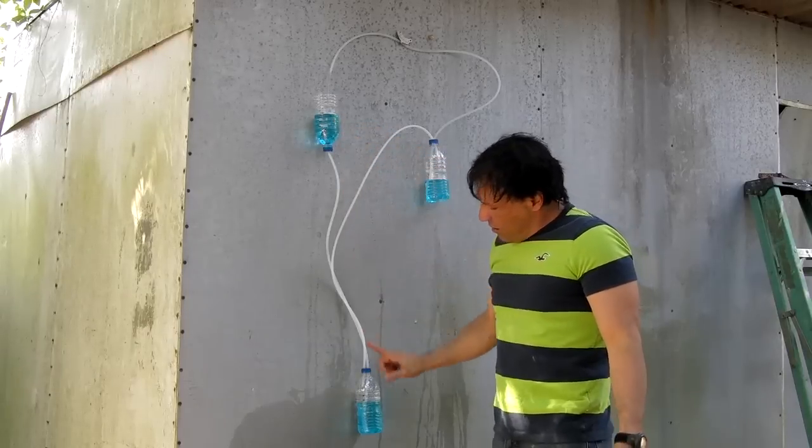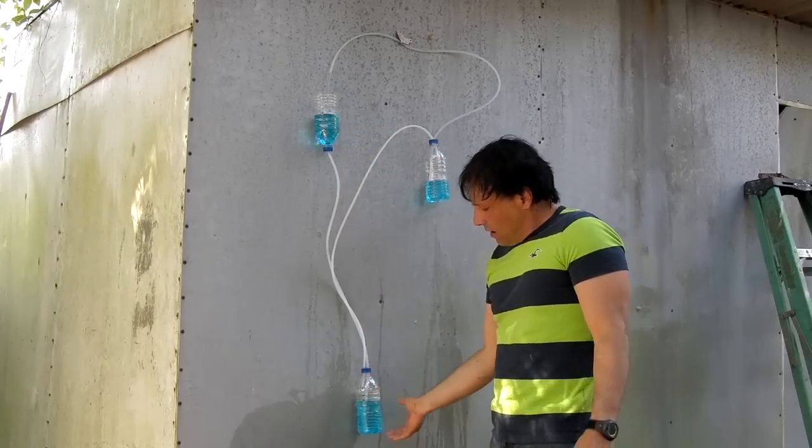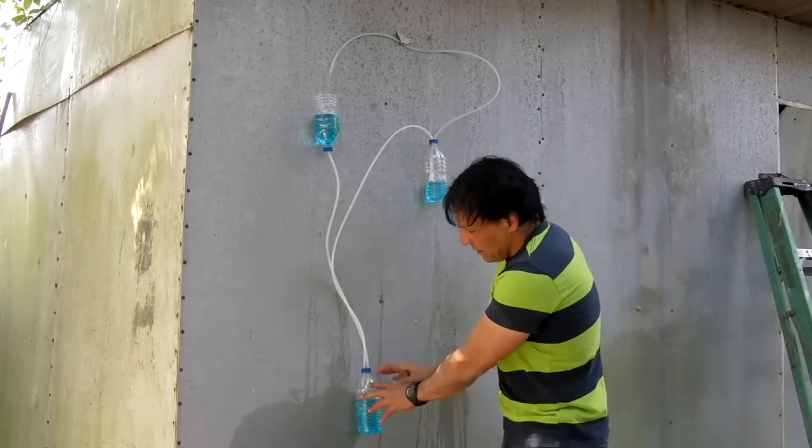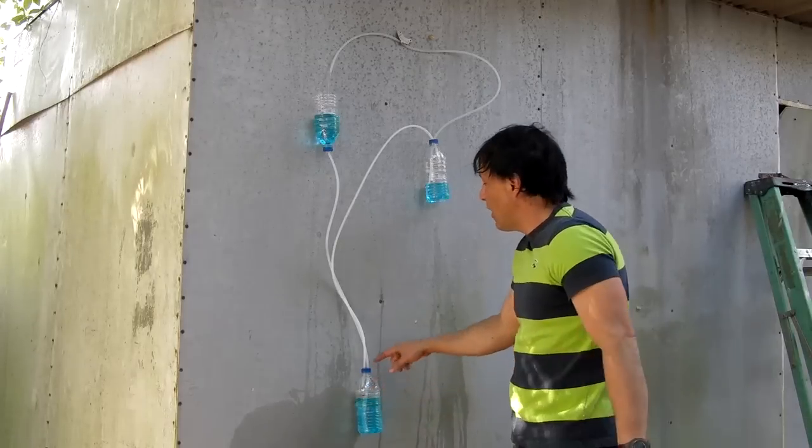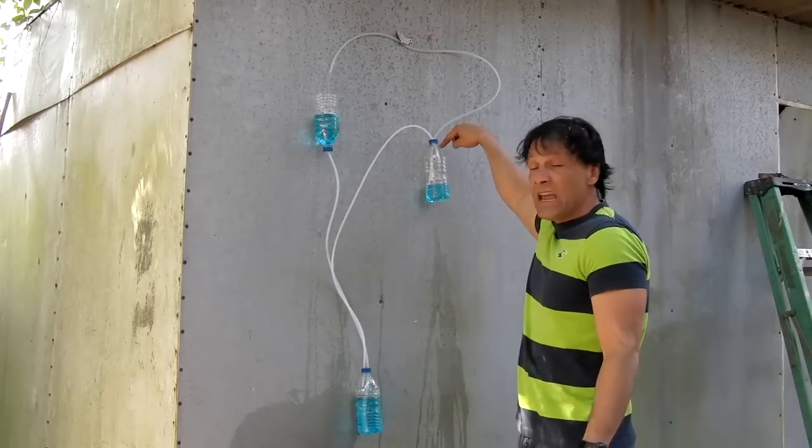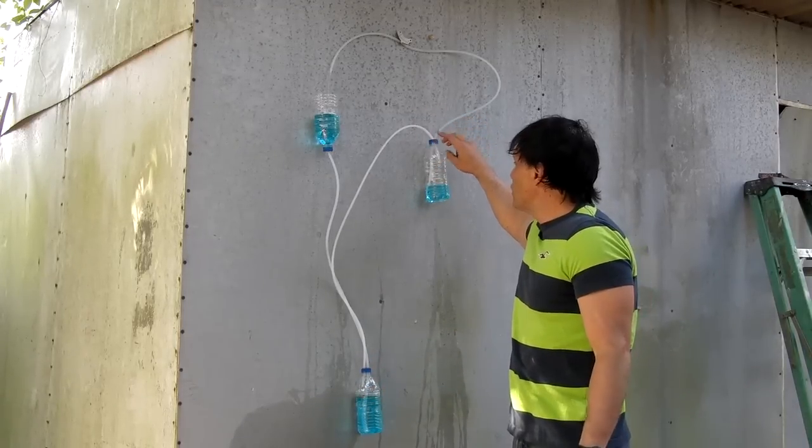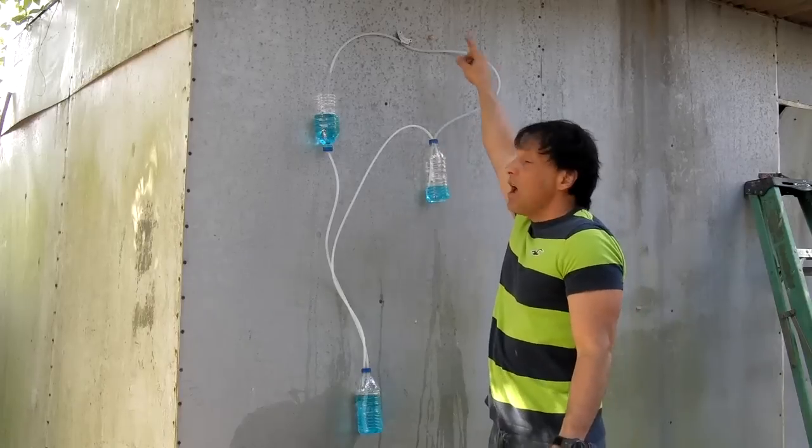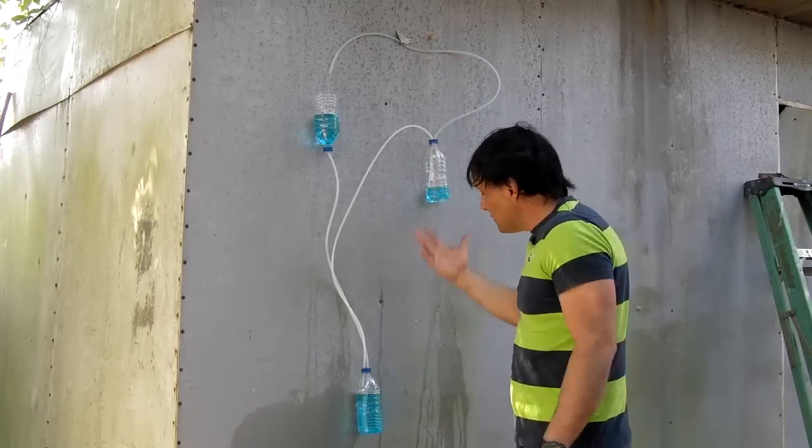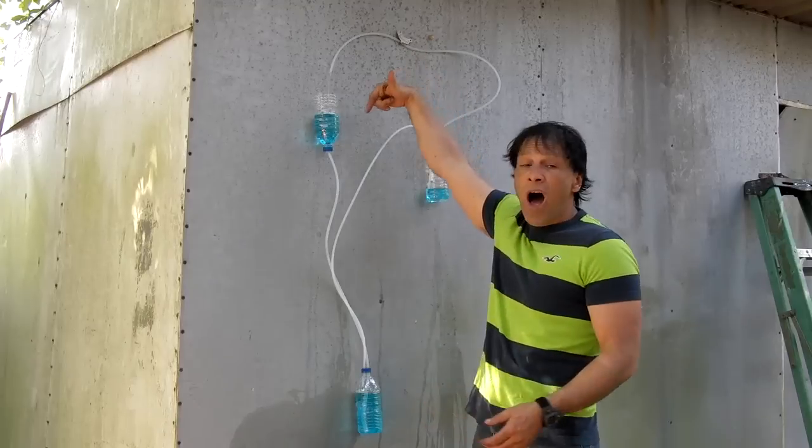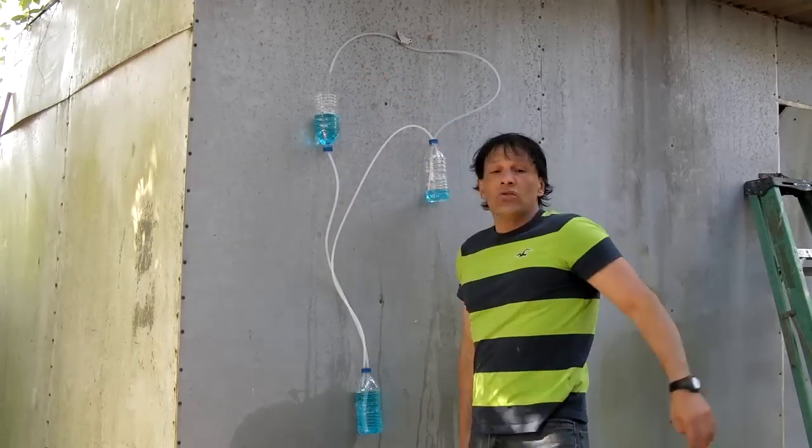You're taking water from here, filling this bottle, compressing air. As the water displaces, the air has to go somewhere. It goes up the hose into this bottle, which pushes the water out and up. Because air is compressed, it's able to go higher than its original starting point.